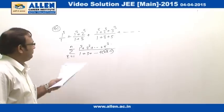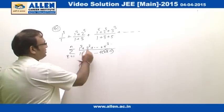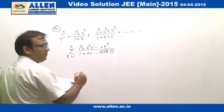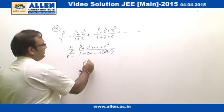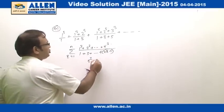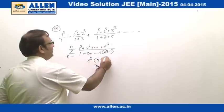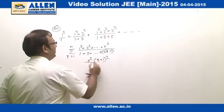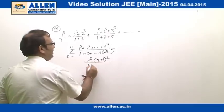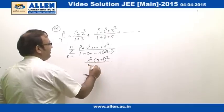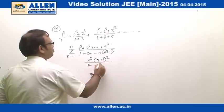If we write the general formula, the numerator is [r(r+1)/2]², which equals r²(r+1)²/4. In the denominator, we have r².